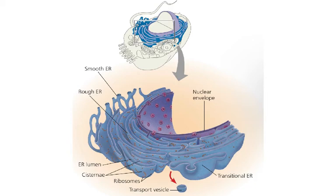Next up is the endoplasmic reticulum, which has two types: rough ER and smooth ER. The rough ER is rough because it is covered in ribosomes, and it makes proteins. The smooth ER makes lipids and also detoxifies poisons. Both have inside compartments called the lumen — a general term for an inside compartment.